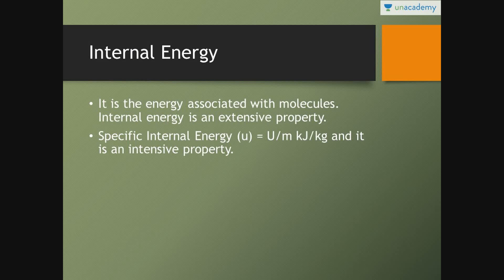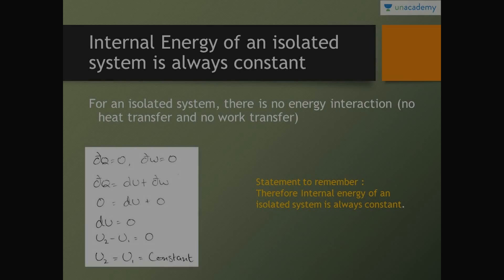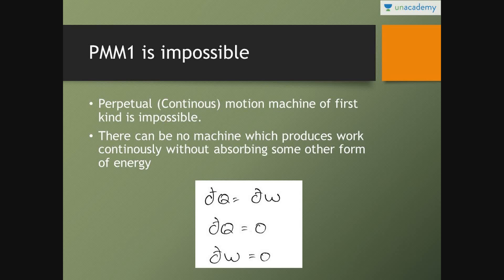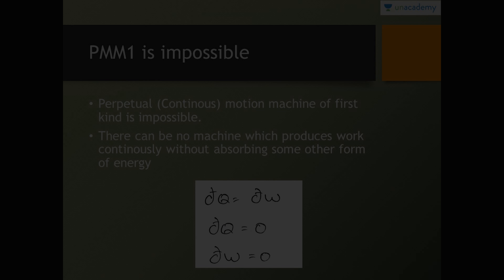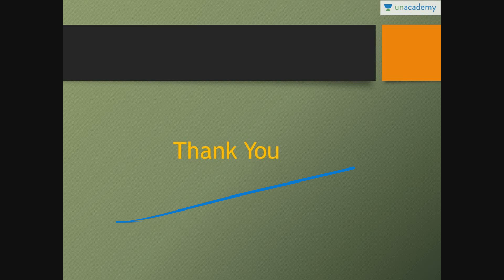To summarize: DQ equals dU plus DW is valid for reversible as well as irreversible processes. DQ equals dU plus P·dV is valid only for a reversible process. Internal energy of an isolated system is always constant, internal energy is a property, and heat transfer is a path function — all important results of the first law of thermodynamics. These colored statements are direct objective questions that appear in previous year papers. Thanks a lot — this is Harshit Agarwal. If you have any queries, you can ask in the comment section. Thank you all.